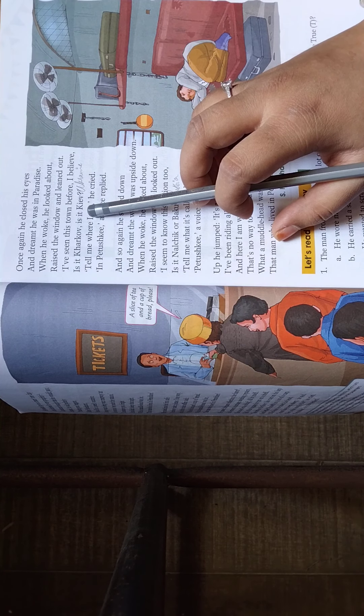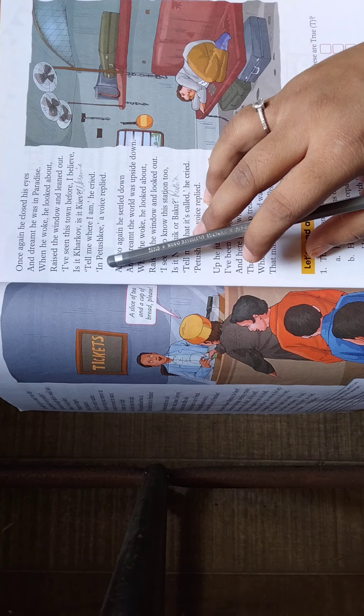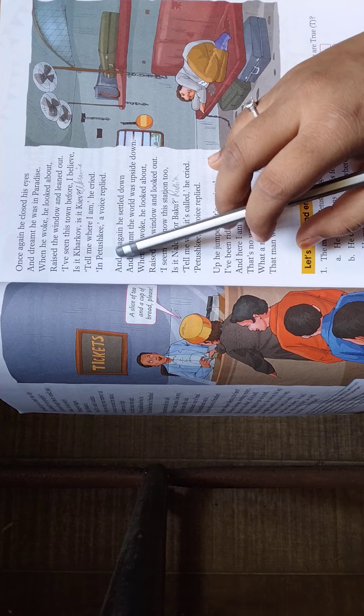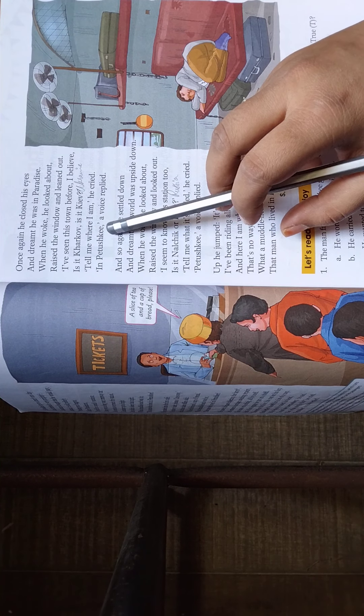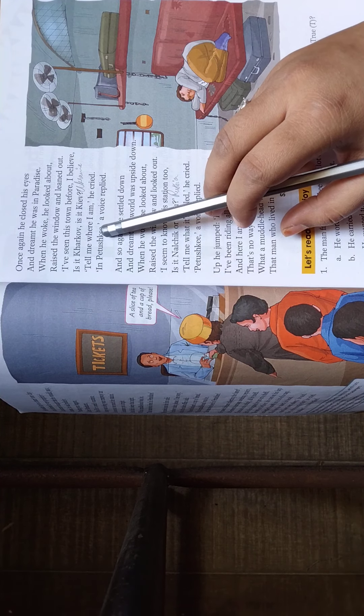वो बोलता है, मैंने शायद यह town पहले देखा है, मुझे लगता है यह Kharkov है. Tell me where I am, he cried. In Itissko, a voice replied. तो वो रोने लगा कि मुझे बताओ मैं कहाँ हूँ.